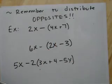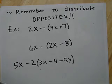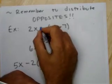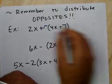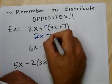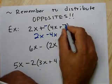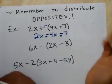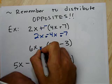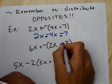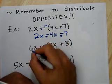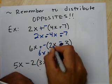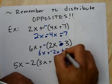Remember, you also have to distribute opposites — don't forget to distribute the negative sign. For example, 2x minus (4x plus 7): that's 2x plus the opposite of everything in there. So that becomes 2x minus 4x minus 7. Similarly, something like 6x plus the opposite of (2x minus 3) becomes 6x minus 2x plus 3, because the opposite of negative 3 is positive 3.